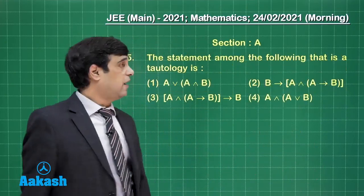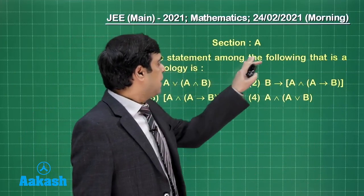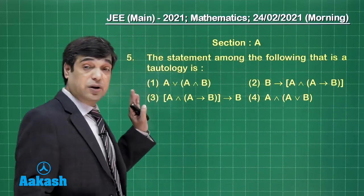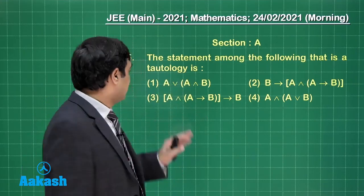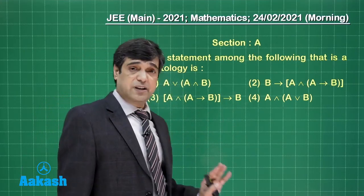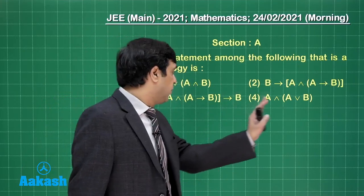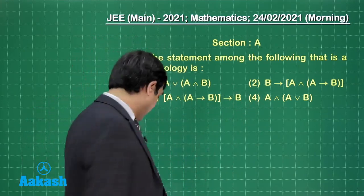Let us move on to the next one that is question number 5. The statement among the following that is a tautology. Tautology meaning all outcomes are true. Now there are two possibilities. One you can draw truth table for each or you can plan some logic.